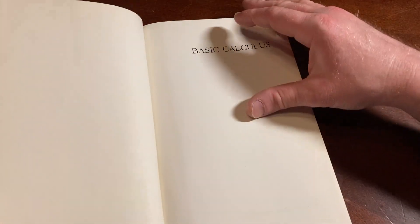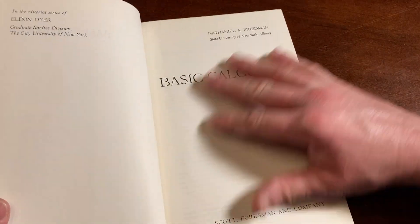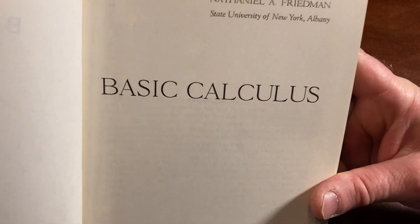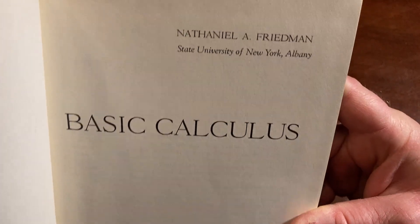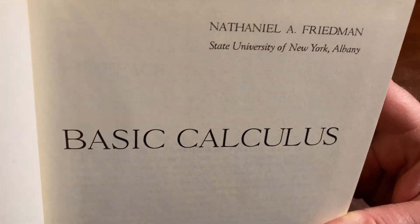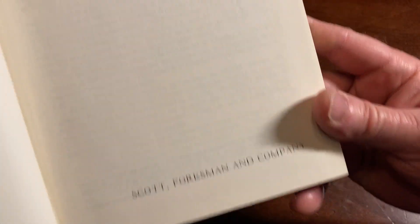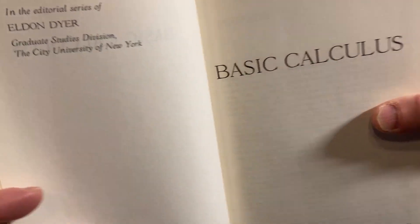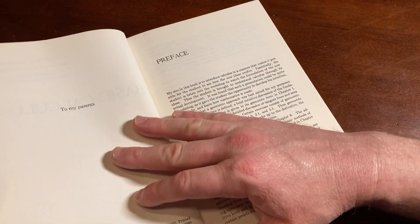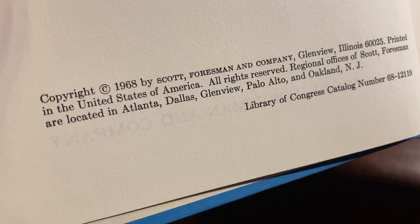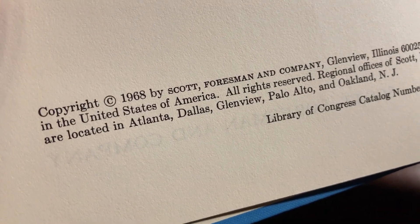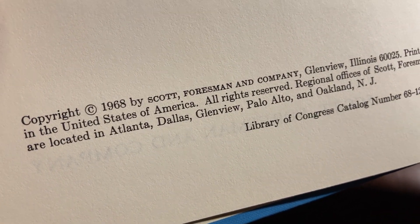Let's open it up. See what we have inside. Basic Calculus. This is Nathaniel A. Friedman, State University of New York, Albany. Basic Calculus, Scott Forsman and Company. To my parents. Oh, here's the copyright. Let's see. When was it made?